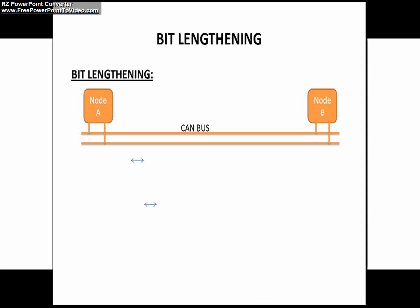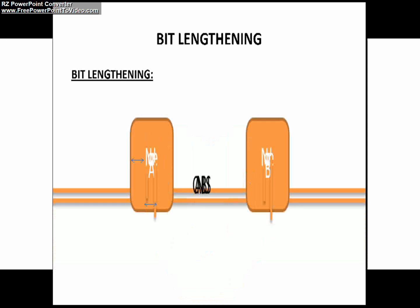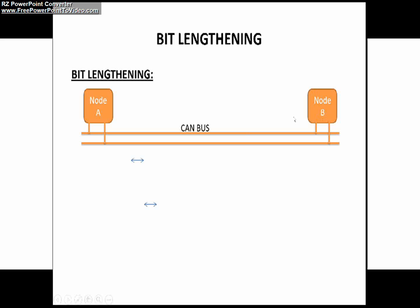Here you can see I am considering two nodes, node A and node B. Let's say node A is the transmitter and node B is the receiver.